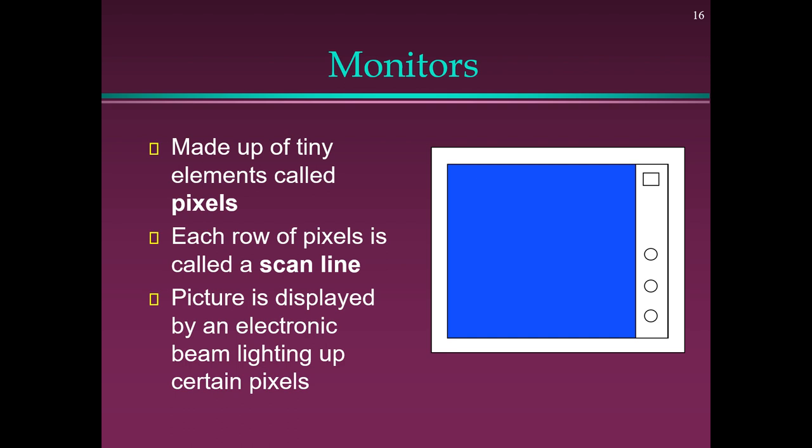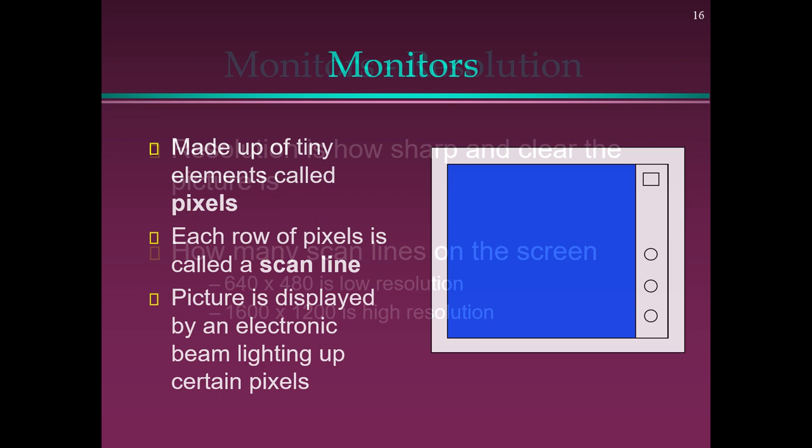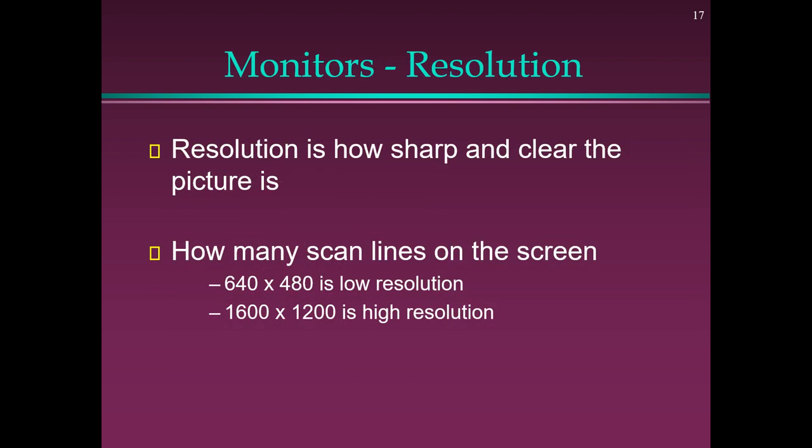Monitors are made up of tiny elements called pixels. Each row of pixels is called a scan line. The picture is displayed by an electronic beam lighting up certain pixels. Monitor resolution refers to how sharp and clear the picture is — 640×480 is low resolution, while 1600×1200 is high resolution.